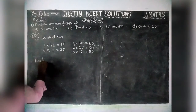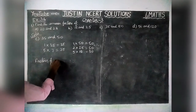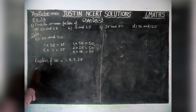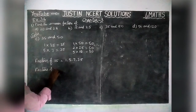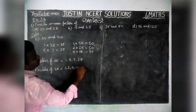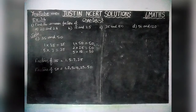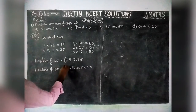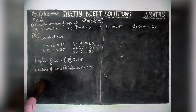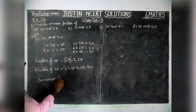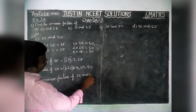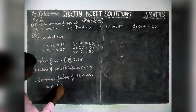So factors of 35 are equal to 1, 5, 7, 35. Factors of 50 are equal to 1, 2, 5, 10, 25 and 50. We have to mark all the common factors. 1 is a common factor and 5 is a common factor. We don't have any other common factors. Therefore, the common factors of 35 and 50 are 1 and 5.